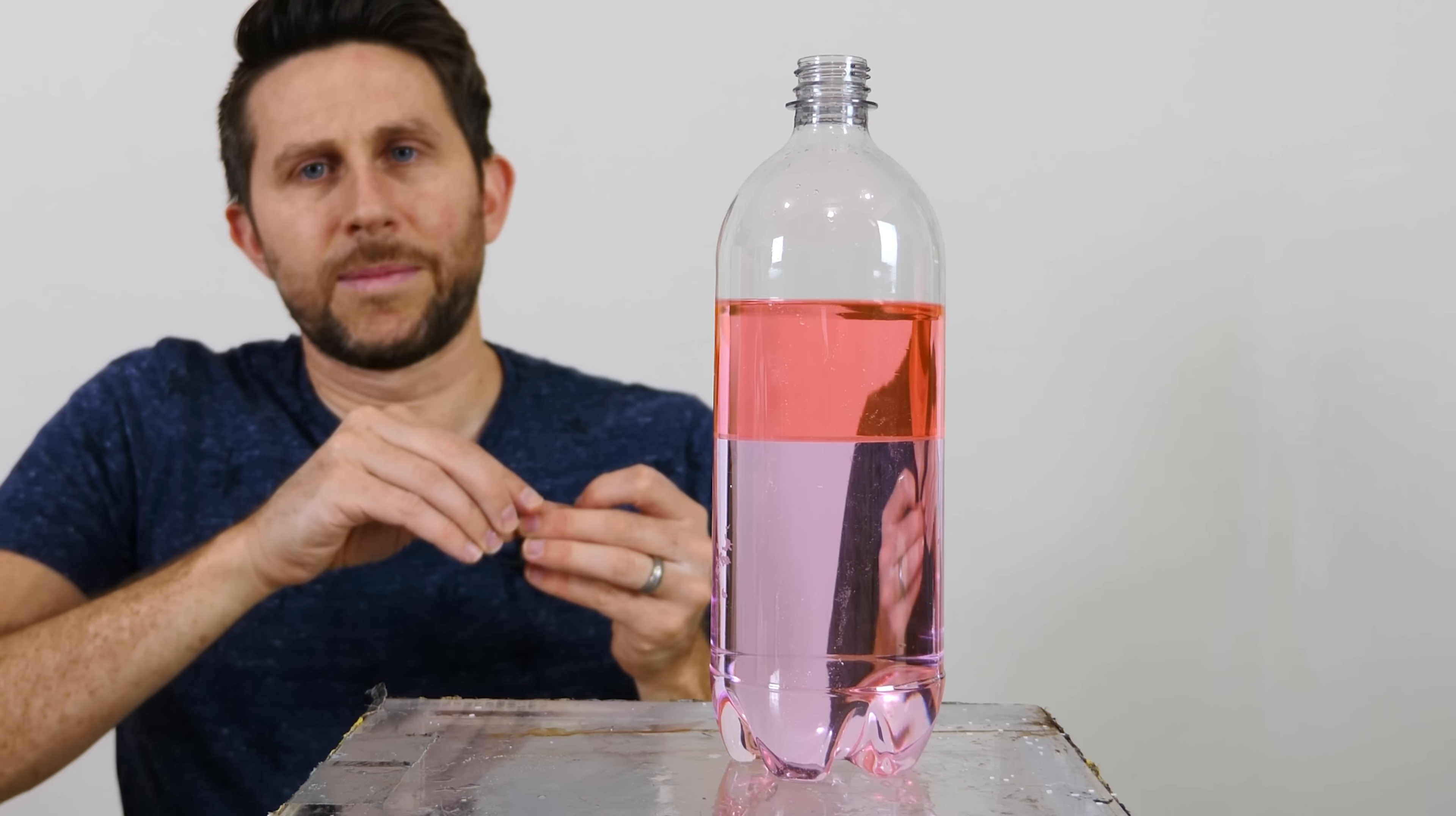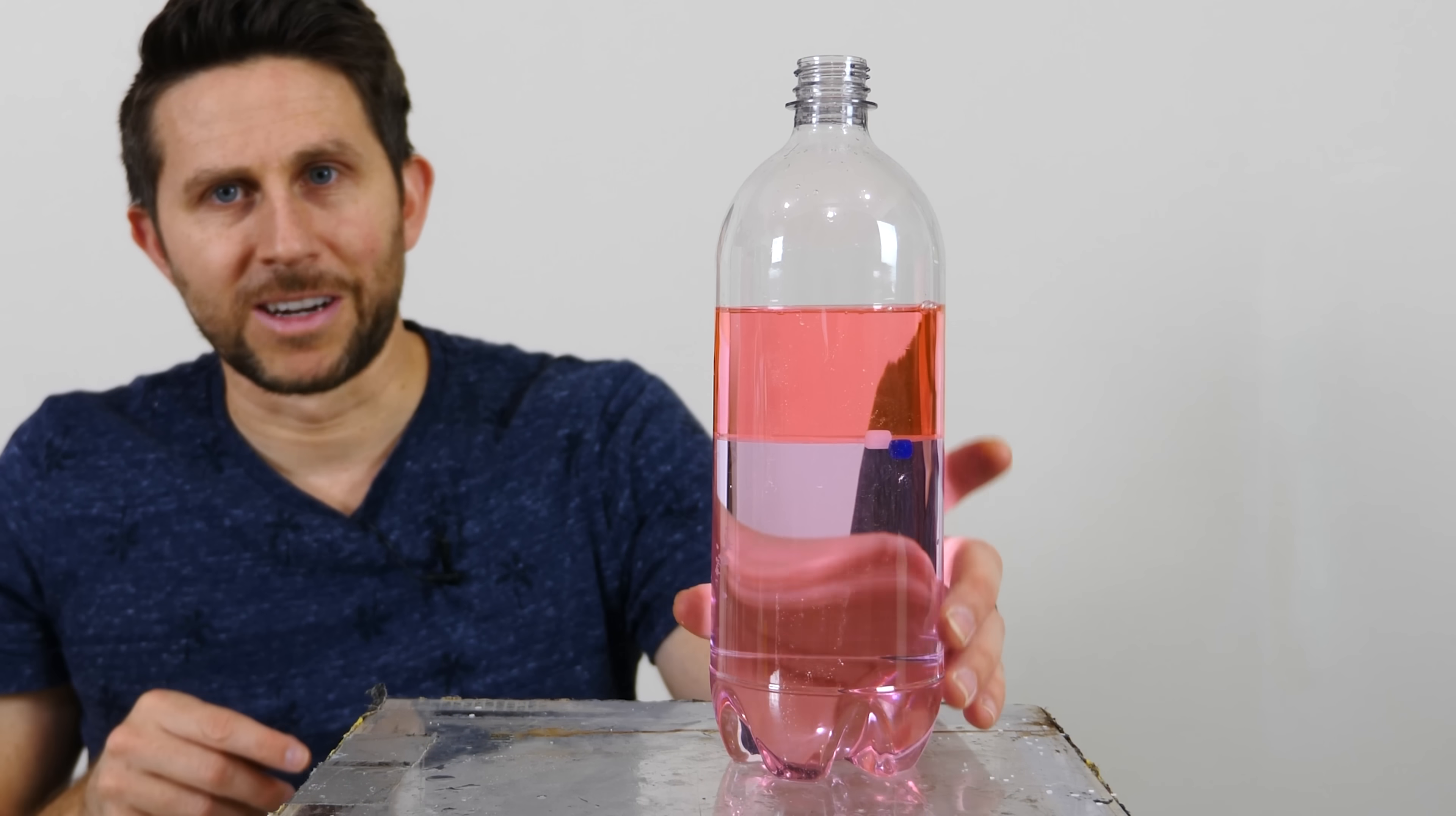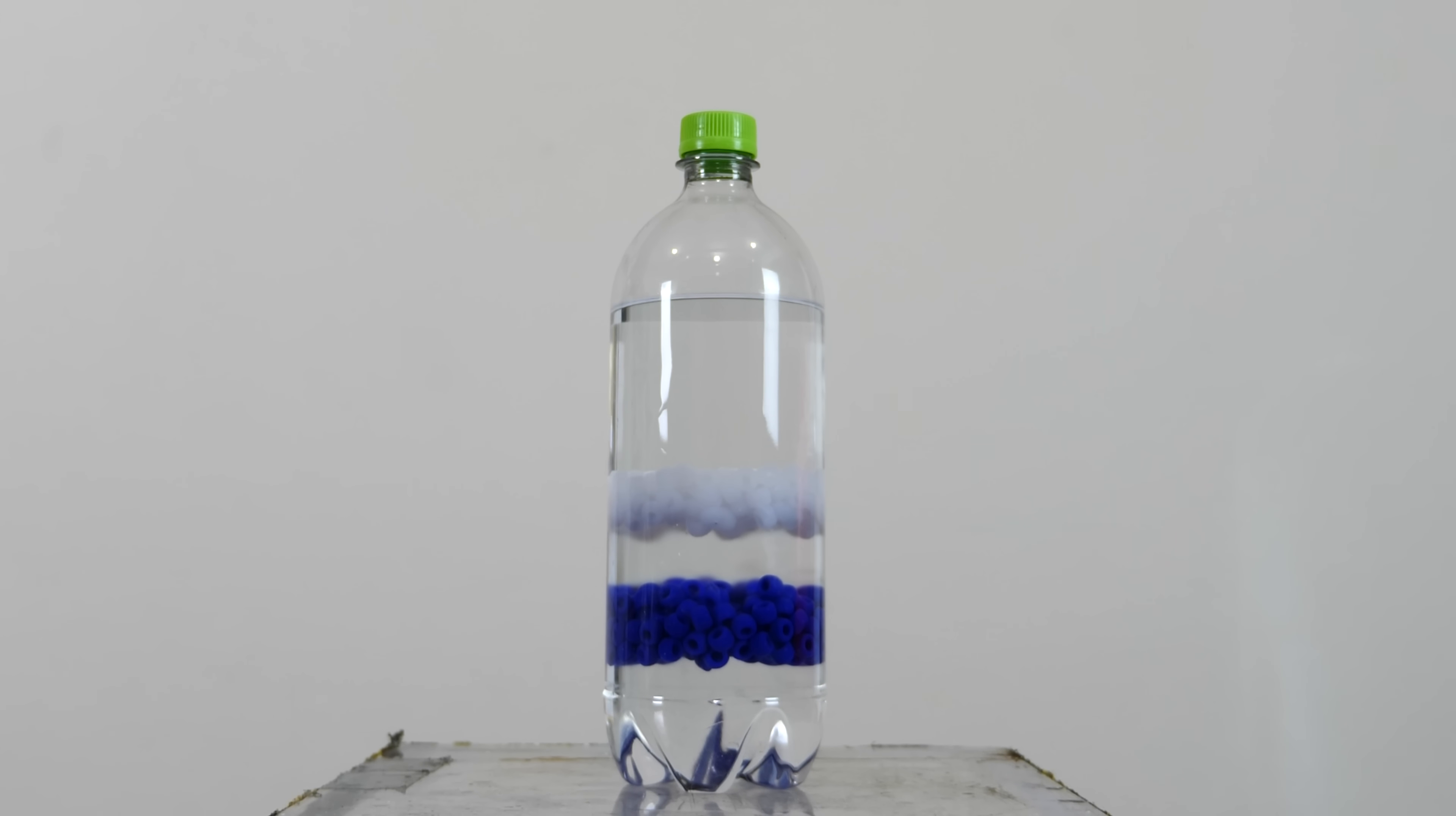We can test this out by putting our beads in here again. And you can see they float right in the middle there. The blue beads are less dense than salt water, but more dense than alcohol. And the white beads are more dense than alcohol, but less dense than salt water. And so both of them separate according to their density.